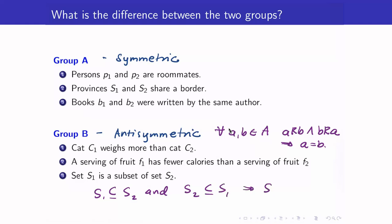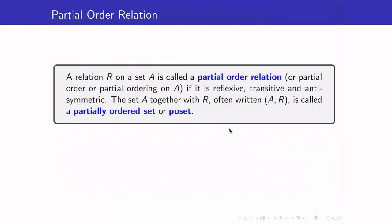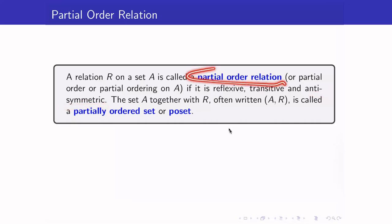We now define partial order relations. A relation on a set A is a partial order relation whenever it is reflexive, transitive, and anti-symmetric. Notice that the only difference from an equivalence relation is that it must be anti-symmetric rather than symmetric. The set A together with the relation R, written as an ordered pair, we call a partially ordered set or a poset.